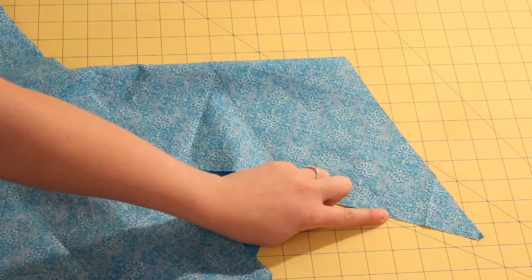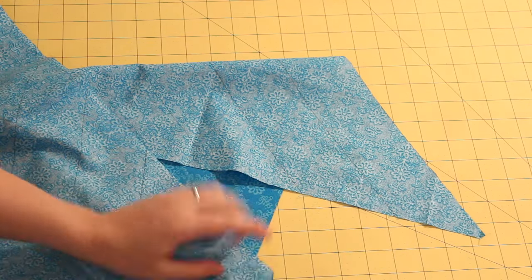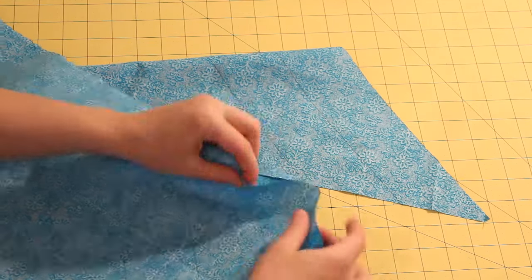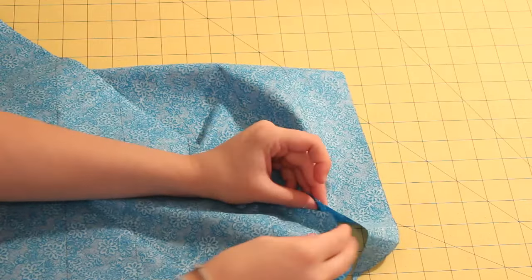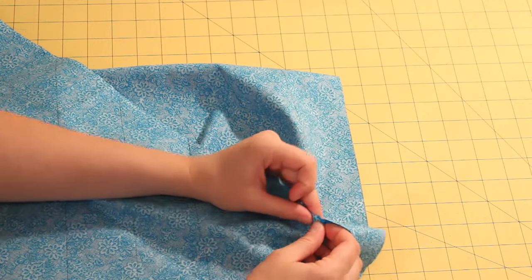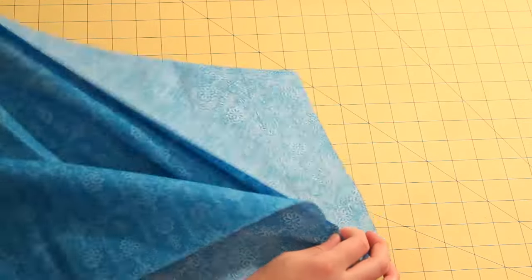Once all the lines are marked bring the two edges together. Instead of lining everything up even offset it by one line. So the end of one side lines up with the first mark on the other side.